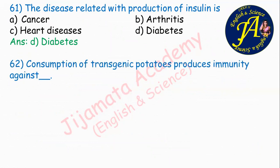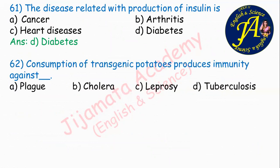Consumption of transgenic potatoes produces immunity against dash. Options are plague, cholera, leprosy, tuberculosis. The consumption of transgenic potatoes produces immunity against Vibrio cholerae and E. coli. Vibrio cholerae causes cholera. Therefore, answer B: cholera is the correct answer.